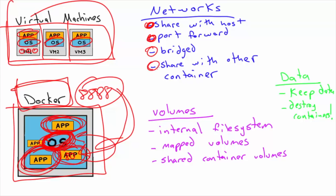You can also share networking with another container. So one application could share the network stack of another rather than having its own. For example, if this is a bridged network application, another app could be directly connected to it, and they could be on one platform of their own. It's very, very flexible — and that's just the networking part.